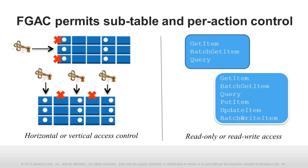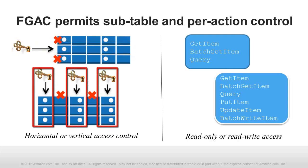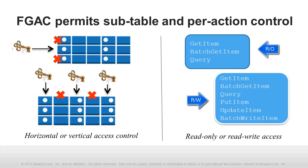Fine-grained access control allows you to define access permissions for particular end users against particular items — that is, rows — of DynamoDB databases. You can also define permissions for users against particular attributes, that is, fields across all items. These permissions specify which API actions the authorized users can perform against the data. For example, it is easy to implement read-write and read-only access. You can even choose to permit only specific actions.